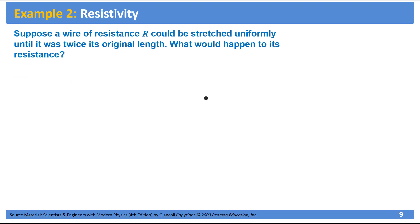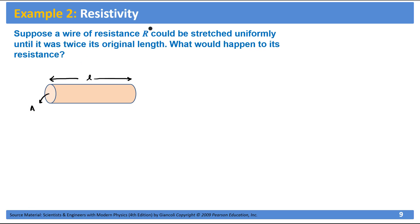Now let's solve a simple example. We have a wire of resistance R with length L and cross-sectional area A. The question is: what would be the new resistance if we stretch it to twice its original length? If you simply focus on the length in R = ρL/A, you might think the resistance will just double. But it's not that simple, because when the length changes, the cross-sectional area must also change since the density and total mass of the material remain constant.